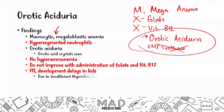You're also going to see failure to thrive and developmental delays in kids, because they're not going to have sufficient thymidine for normal erythropoiesis. Erythropoiesis will be reduced, meaning decreased RBC production, and their body is not going to be able to mature properly because they're not getting the nutrients and oxygen they need to grow. That's why you see failure to thrive in certain cases.